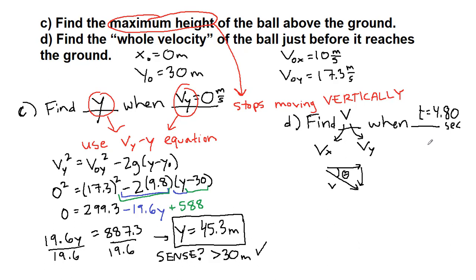The first thing is vx is really straightforward because we have this equation that tells us that vx is just the initial velocity in that direction. So the vx component is 10 meters per second.